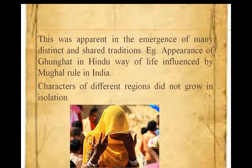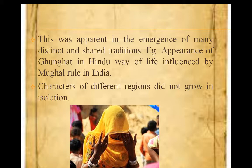When the Mughal emperor declined in the 18th century, it led to the re-emergence of regional states and big empires. Across the subcontinent, regions were left with the legacies of big and small states that ruled over them. Legacies means the rulers left their mark in the form of palaces, wealth, and traditions. For example, the Gunghat tradition in Hindu way of life is an influence of Mughal rule in India, because some Hindu kingdoms were also ruled by the Mughal empire.